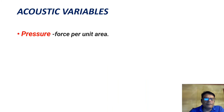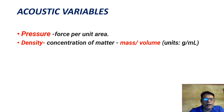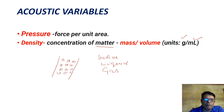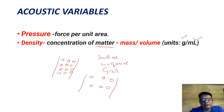Regarding acoustic variables: pressure is force per unit area. Density is the concentration of matter — mass per volume — with units of grams per milliliter. In the area of compression, the molecules of the medium come very close to each other and the concentration of mass increases. In rarefaction, the molecules are far apart, there is less concentration of molecules per unit area, and the density is low.